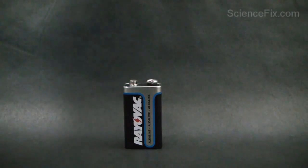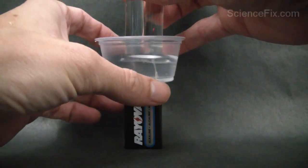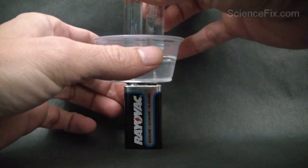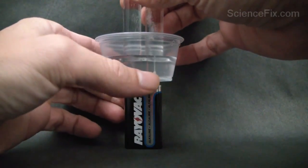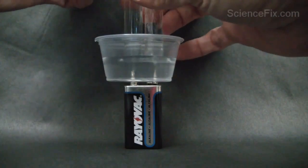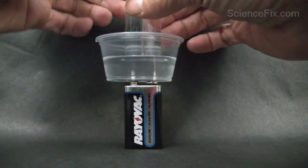In the container is going to be some water that has baking soda mixed into it. The baking soda in the water allows electricity to flow between the two metal tips of the pushpins.